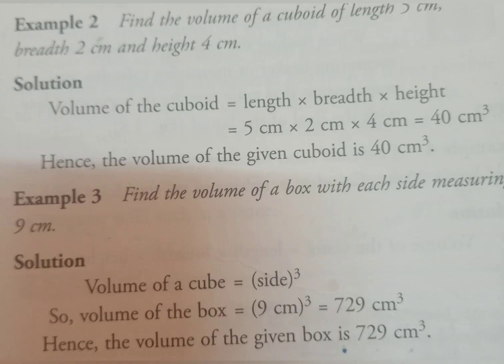Take an example. A cuboid has length 5 cm, breadth 2 cm, and height 4 cm. How do we calculate its volume? Volume of the cuboid equals length into breadth into height. So 5 into 2 into 4 equals 40 cm cube. In this way we can calculate the volume of a cuboid.